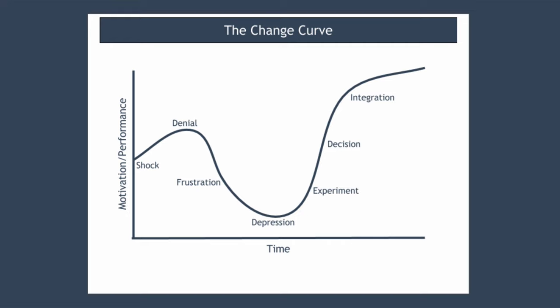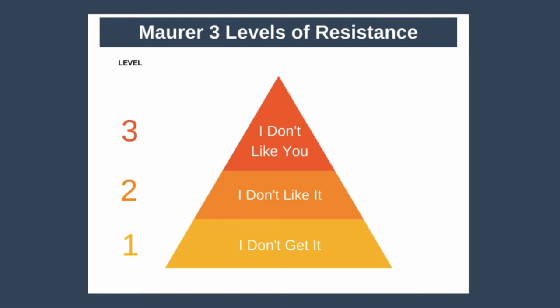The final model is Maurer's three levels of resistance. This model is based on the idea that people resist change to protect themselves from harm. The three levels are: level one, 'I don't get it' — people are missing the facts and figures they need to understand why change is necessary; level two, 'I don't like it' — people experience an emotional response to the change and find it difficult to take on board new ideas when in fight-or-flight mode; and finally, level three, 'I don't like you' — people are not resisting the change itself, but they don't trust your ability to deliver it.